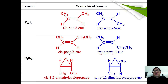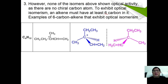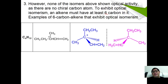For an alkene to exhibit optical isomerism, it must have at least six carbons. For C6H12, 3-methylpent-1-ene can exhibit optical isomerism. If you look carefully at the chiral carbon atom, this demonstrates the minimum number of carbons required for an alkene to exhibit optical isomerism.